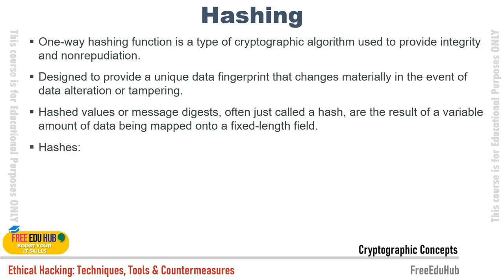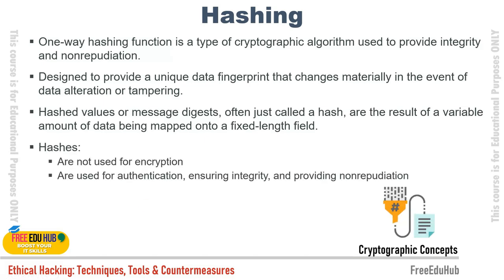Hashing is a one-way function used to provide integrity and non-repudiation. It's easy to compute in one direction but extremely difficult to reverse. It provides a unique data fingerprint that changes materially if the data is altered or tampered with. Hash values (also called message digests) result from a variable amount of data being mapped to a fixed length. Hashes are not for encryption, but for authentication and ensuring integrity and non-repudiation.